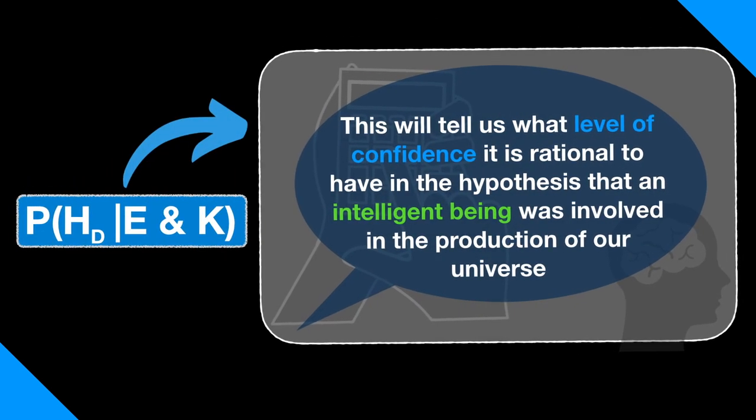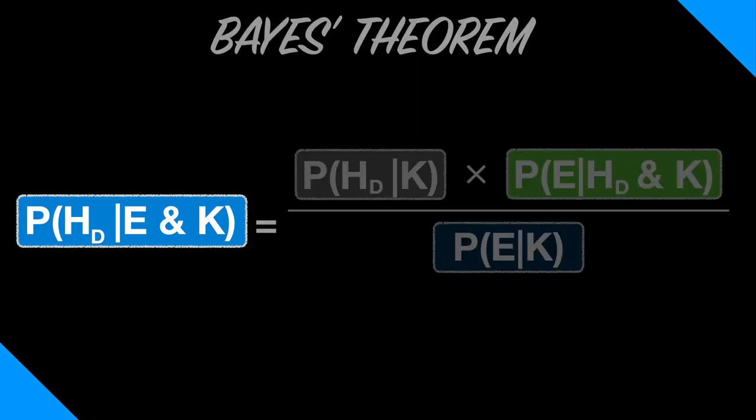This will tell us what level of confidence it's rational to have in the hypothesis that an intelligent being was involved in the production of our universe. We can calculate this epistemic probability using the rest of Bayes' theorem.